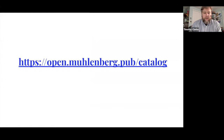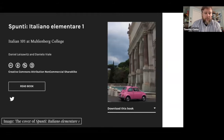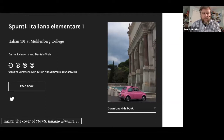This is our small but mighty Pressbooks instance — open.muehlenberg.pub.catalog. We have five published books, and I'll talk about all of those briefly. The first was Elementary Italian. There's now Elementary Italian II and an Intermediate Italian I in the works. These have been very well received and are being used at other institutions — everything we could have expected. A tremendous amount of credit goes to Professors Leiswitz and Viale for helping us move in this direction.